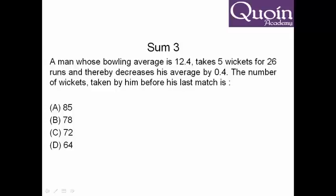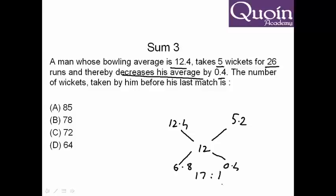Now here let's look at how the average is given. The average is given in terms of average of the scores, which is 12.4 minus average decreases by 0.4. So the average becomes 12. So initial average is 12.4. Current average is 26 divided by 5 which comes to 5.2. So again we can use alligation. 12.4 minus 12 is 0.4. 12 minus 5.2 comes to 6.8. If we take the ratio it comes to 17 is to 1. That means here if he has taken 5 wickets, that means here he will take 85 wickets. So the answer will be 85.